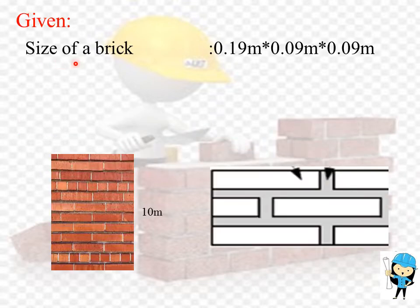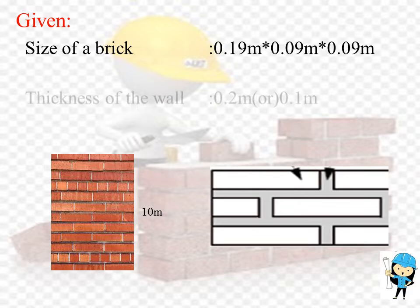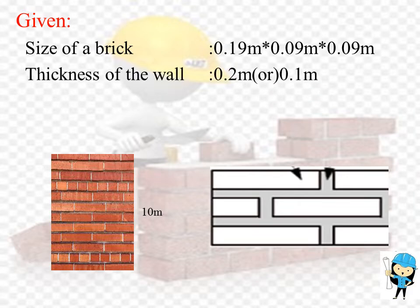We already know the size of the brick is 0.19 meter x 0.09 meter x 0.09 meter. The thickness of the wall is taken as 0.2 meter or 0.1 meter. 0.2 meter means full size brick wall, and 0.1 meter means half size brick wall.